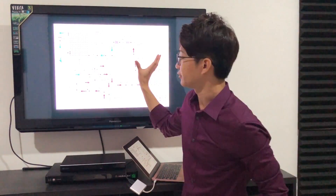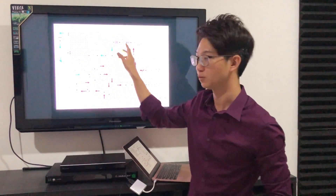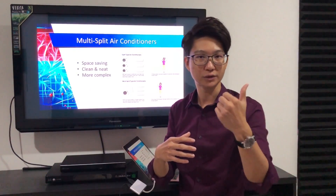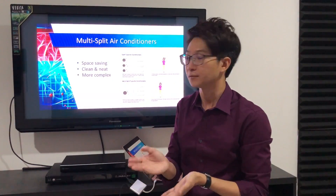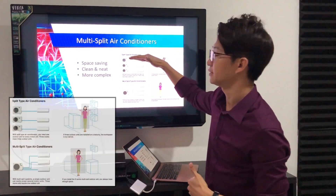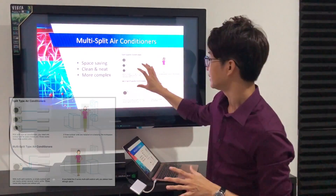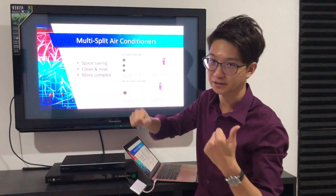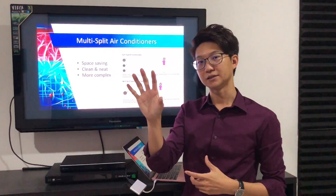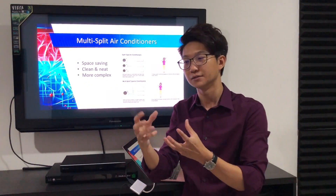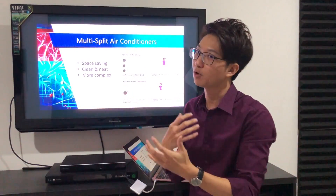If you have a split without the heat mode, you don't have the four-way valve — it's just one straight process. There are two types of split air conditioner: single split and multi-split. Single split is very simple — one-to-one. Multi-split is one-to-many. The first benefit is space saving, and it also looks cleaner with just one outdoor unit. But actually the system is more complex.